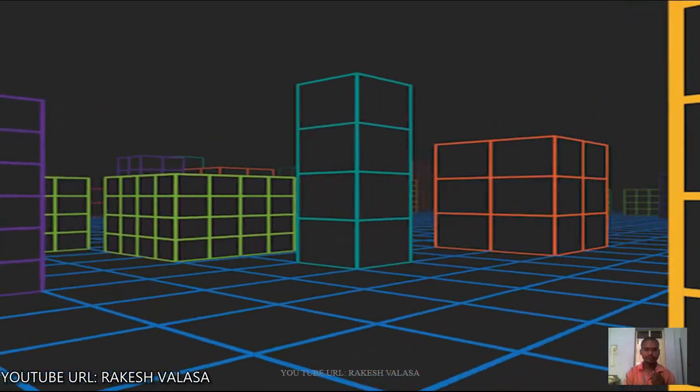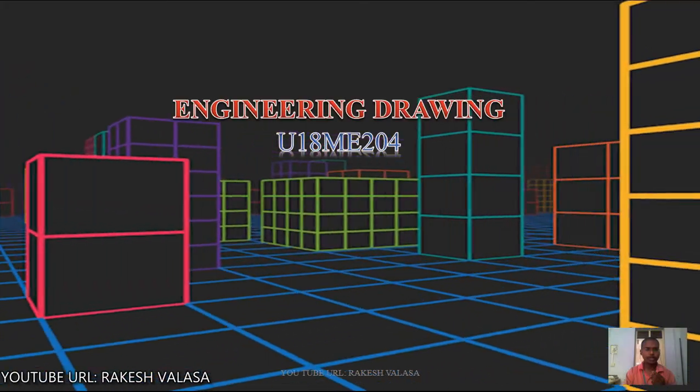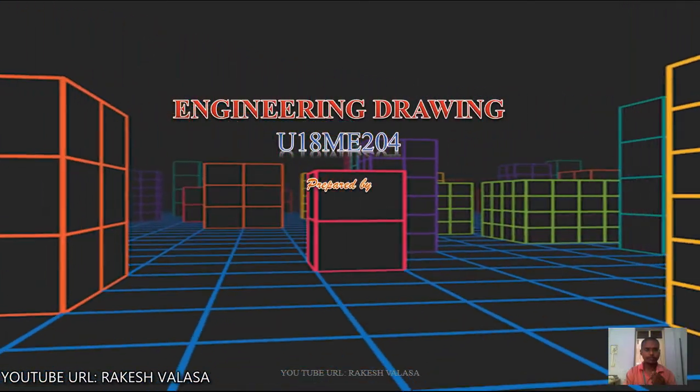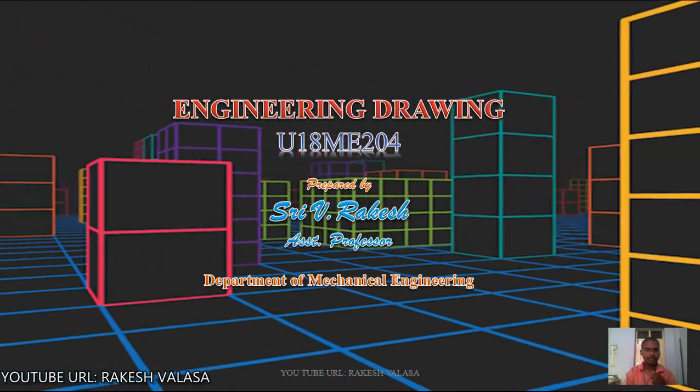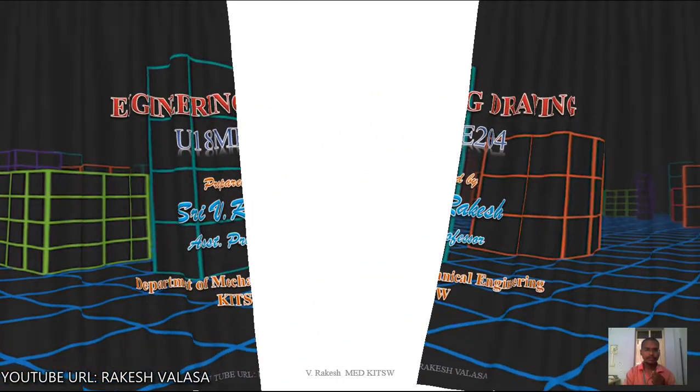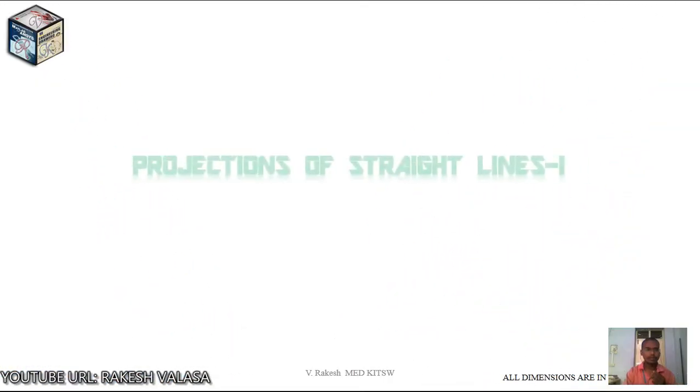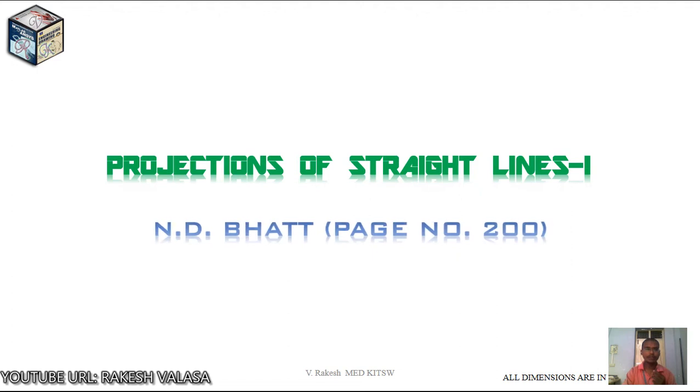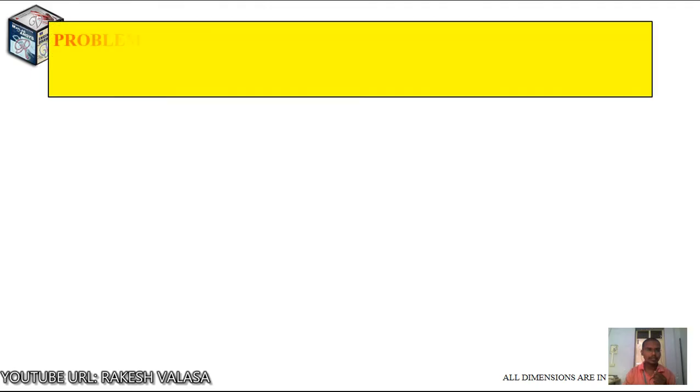Good morning students. Welcome to Engineering Drawing Tutorial, Course Code EU18ME204. I am V. Rakesh, Assistant Professor in the Department of Mechanical Engineering, KITS Warangal. In this video lecture, I am going to explain one problem in Projections of Straight Lines 1. I have taken this problem from Engineering Drawing Textbook by N.D. Bhatt, page number 200. Let us see the problem.